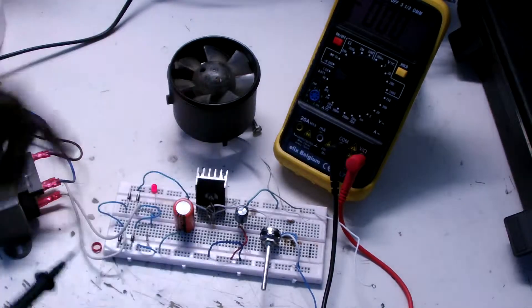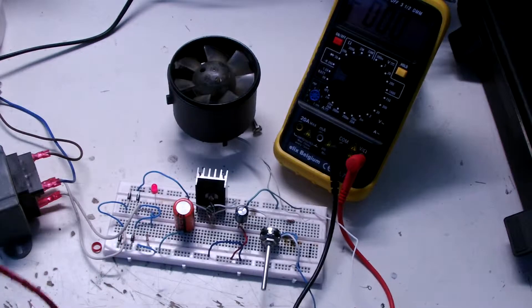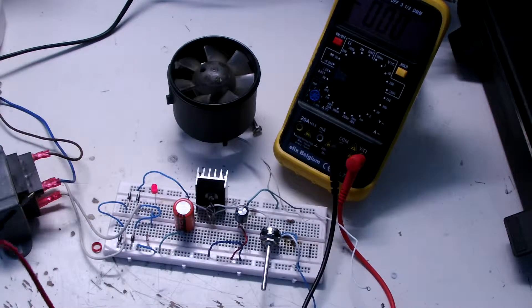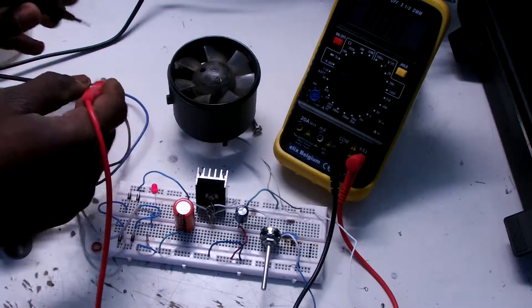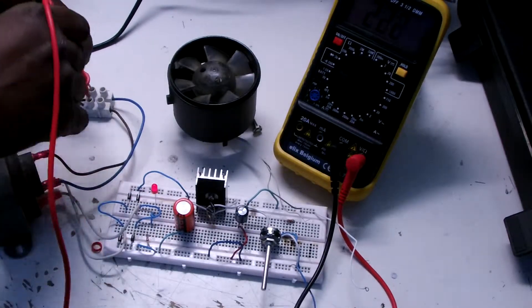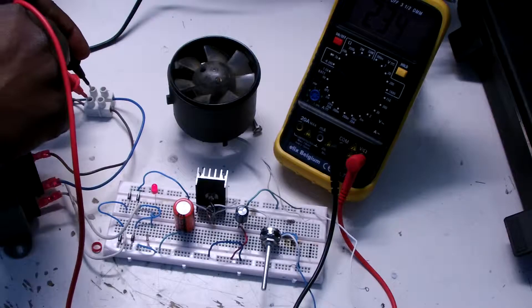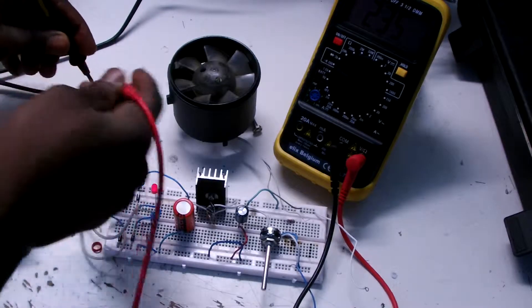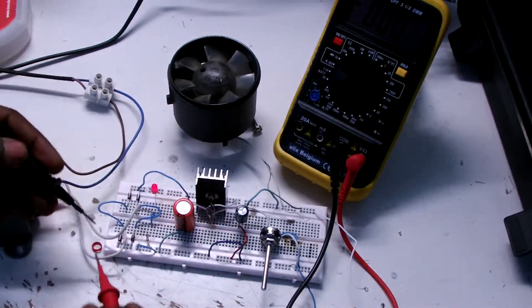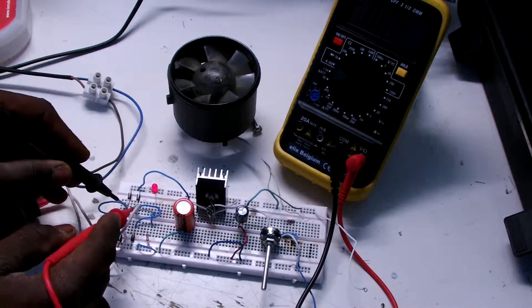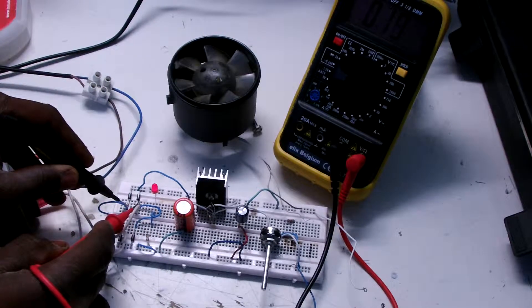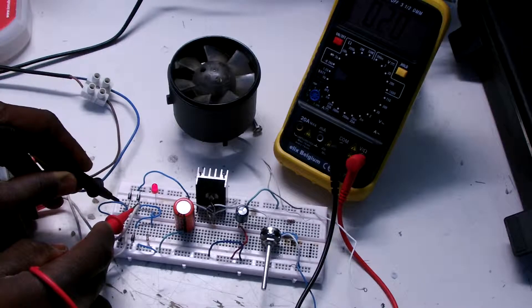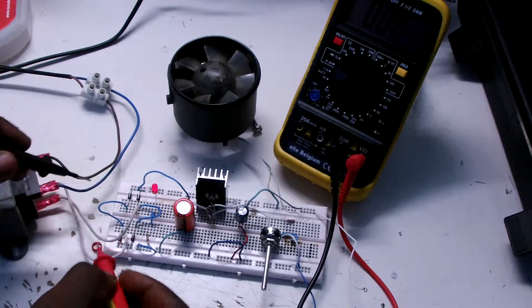I'm gonna measure the AC that goes inside the transformer, about 230 volts. And then it's gonna step down and come out over here at about 19-20 volts.